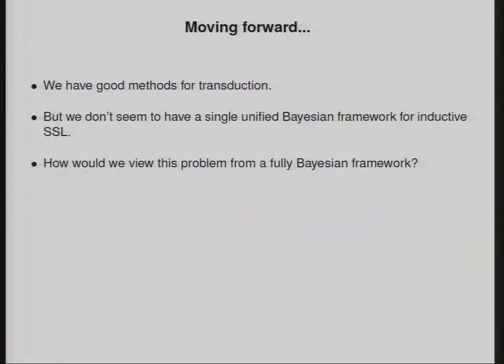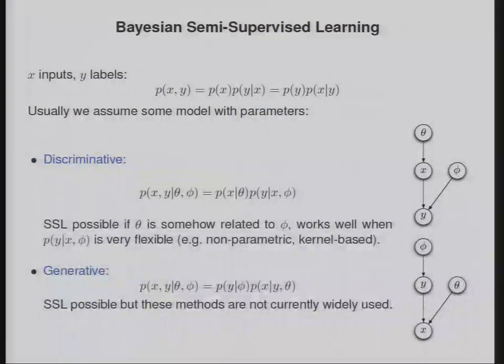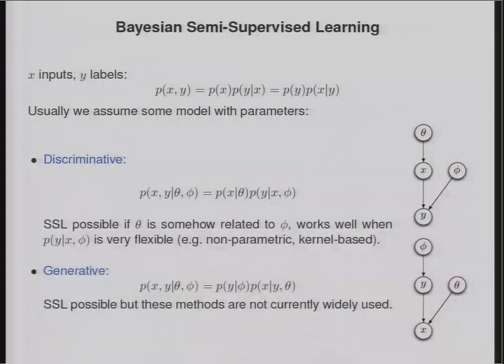We kind of would be interested, certainly I would be interested, in a single unified framework for inductive semi-supervised learning from a Bayesian point of view. I don't think we really have such a thing, or maybe the answer is so trivial it's not really interesting. It's useful to think about that in the context of making a distinction between discriminative and generative models. In a discriminative model, we have our inputs x and our labels y, and the model says there's some distribution over the inputs, we're usually not going to care about that. Then we directly parametrize some distribution over the labels given the inputs through some parameters phi.